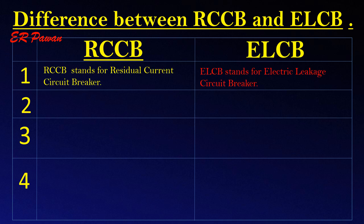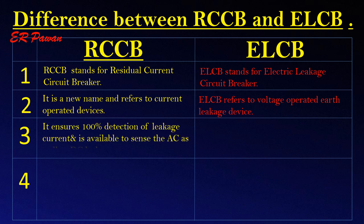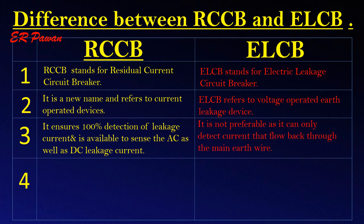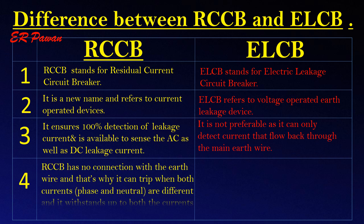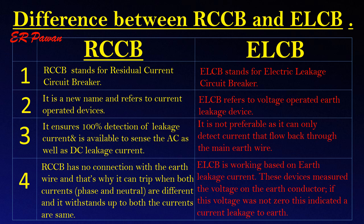Comparing RCCB and ELCB: RCCB stands for Residual Current Circuit Breaker and is a new name referring to current-operated devices, while ELCB refers to voltage-operated earth leakage. RCCB ensures 100% detection of leakage current and can sense both AC and DC leakage current. ELCB is not preferable as it can only detect current that flows back through the main earth wire. RCCB has no connection with the earth wire and trips when phase and neutral currents are different. ELCB works based on earth leakage current by measuring voltage on the earth conductor — if this voltage is not zero, it indicates a current leakage to earth.